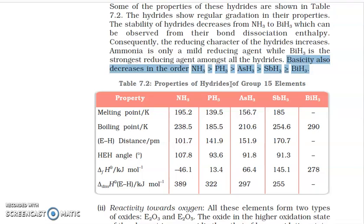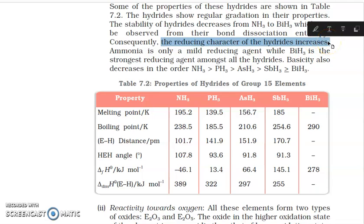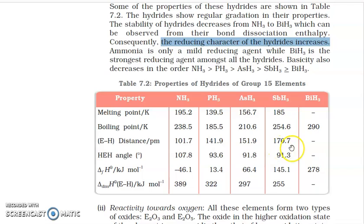Second question from this section: the reducing character of hydrides increases going down the group. Write each point as a question, then its reason. Reducing character means the compound itself gets oxidized to reduce another substance. It reduces when it releases H. The E-H bond — the greater the E-H distance, the more easily it breaks, releasing H.